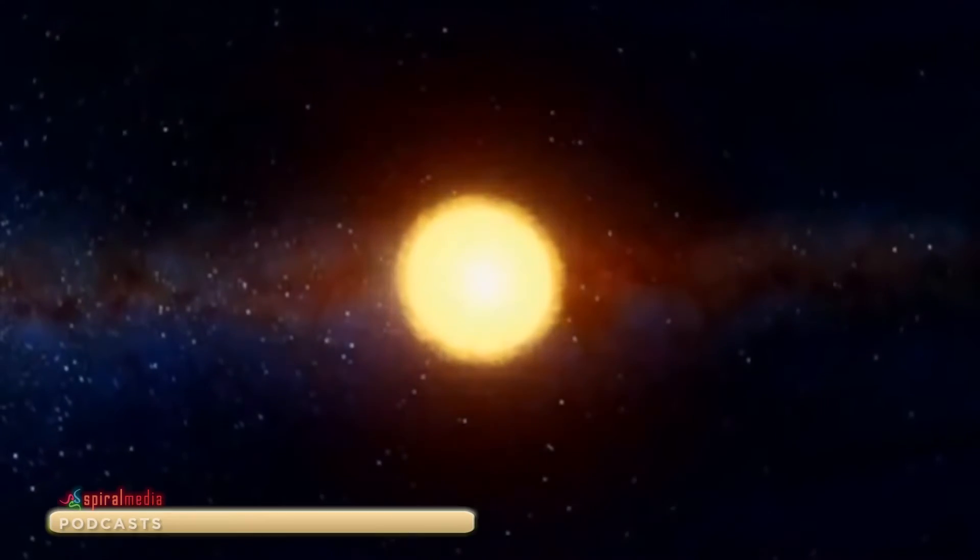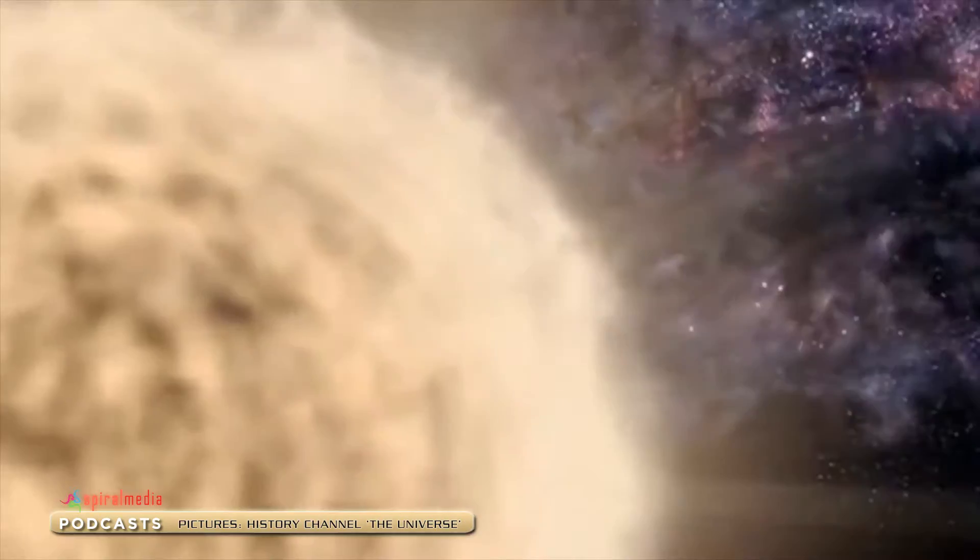If a nearby supernova happens close to the solar system and Earth, then there might be freshly produced nuclides, radionuclides, that might be ejected at high speed and high velocity.